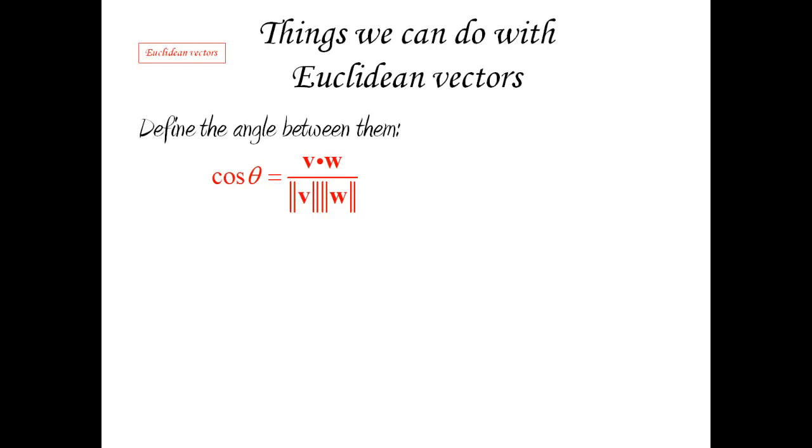For general Euclidean vectors, we may not have a length—we have a magnitude—but we can still use the same formula. We can compute the right-hand side. And this is an important point to consider: it can be shown that the right-hand side, because of properties of dot products and the norm, is always going to be between negative one and one, which means the right-hand side is always in the domain of the cosine of theta.